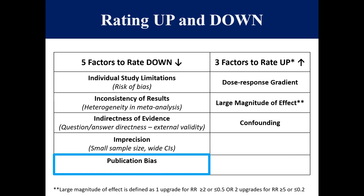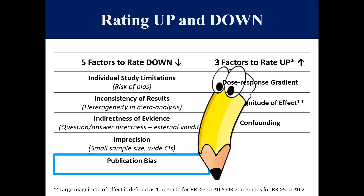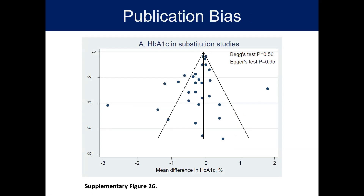Next is publication bias. Recall whether you found publication bias in your SRMA. If it was not significant, you do not downgrade. If it was significant and a method was applied to address it — like a trim and fill analysis — which demonstrated no significant small study effects, you would not downgrade. However, if there was significant publication bias and imputing missing unpublished studies gave a significantly different conclusion, then you would downgrade. In my example, there was no significant publication bias in the substitution studies on HbA1c, so I would not downgrade.